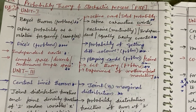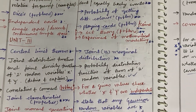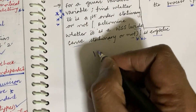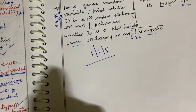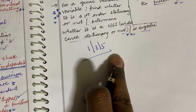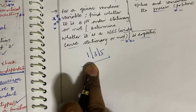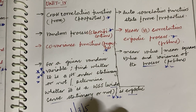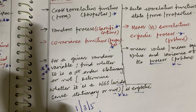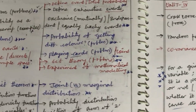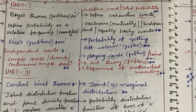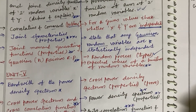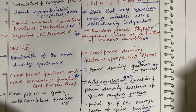Dear students, I have come up with only these questions for the course Probability Theory and Stochastic Process. I am going to let you know that if you are an average student, please do work out Unit 1, Unit 3, and Unit 5 only to score good marks and clear the course. Hope you are going to like my videos — please subscribe to my channel, share this with your friends, and comment if you are looking for any other course. Good luck and God bless you all, dear students. Thank you.